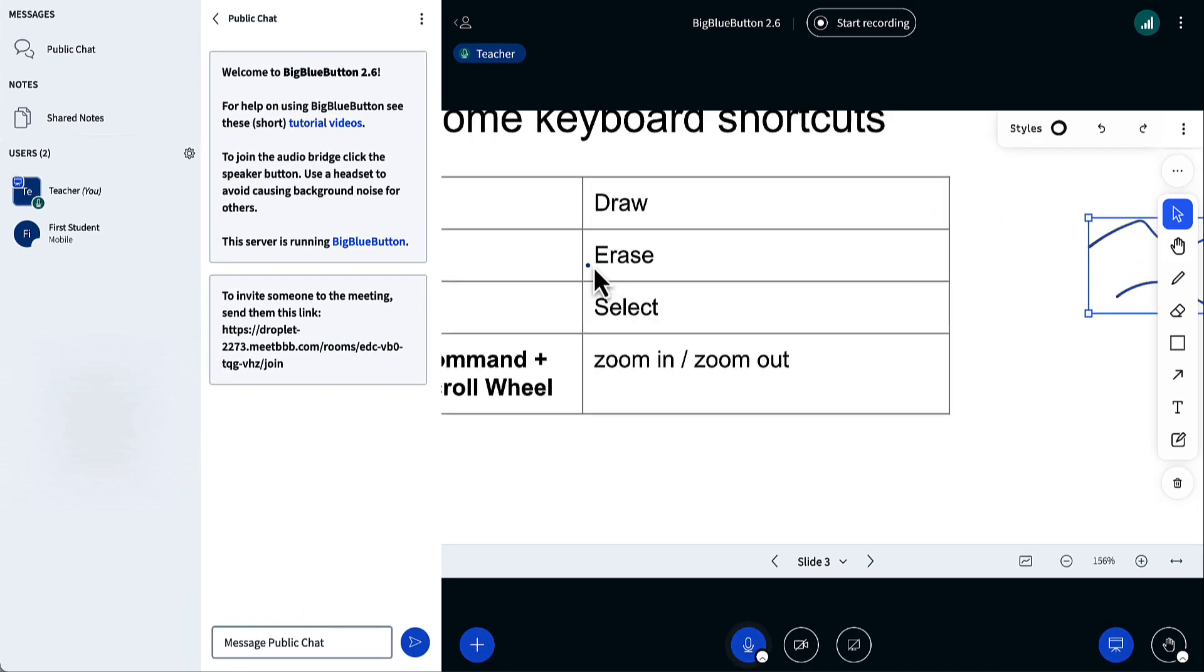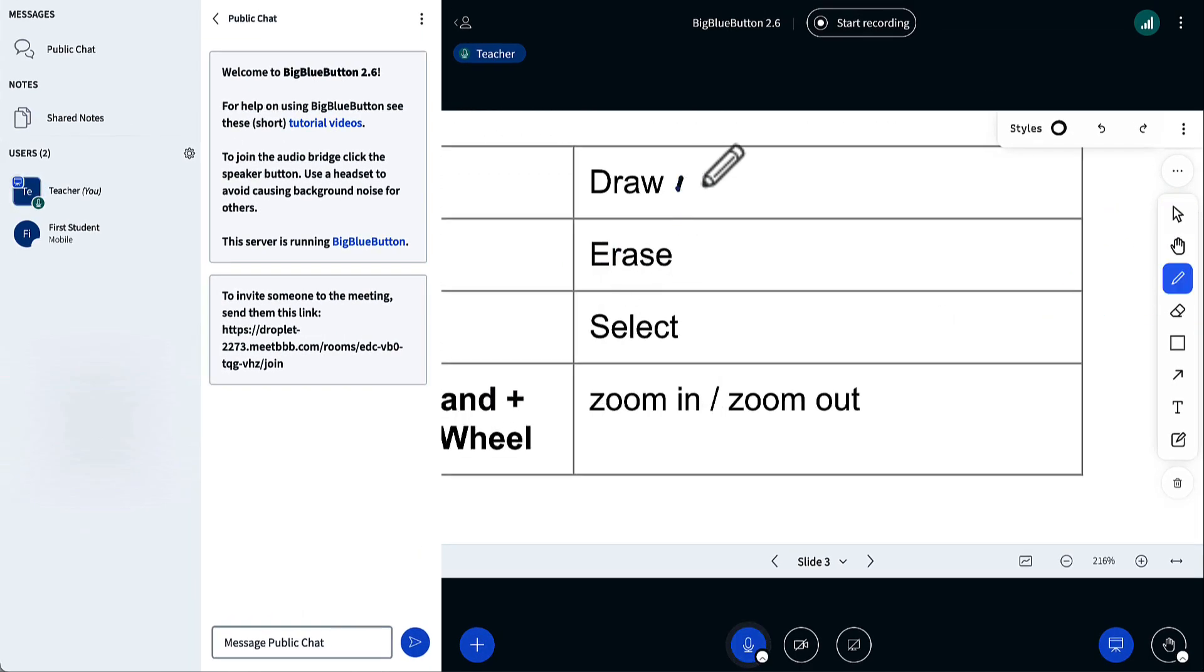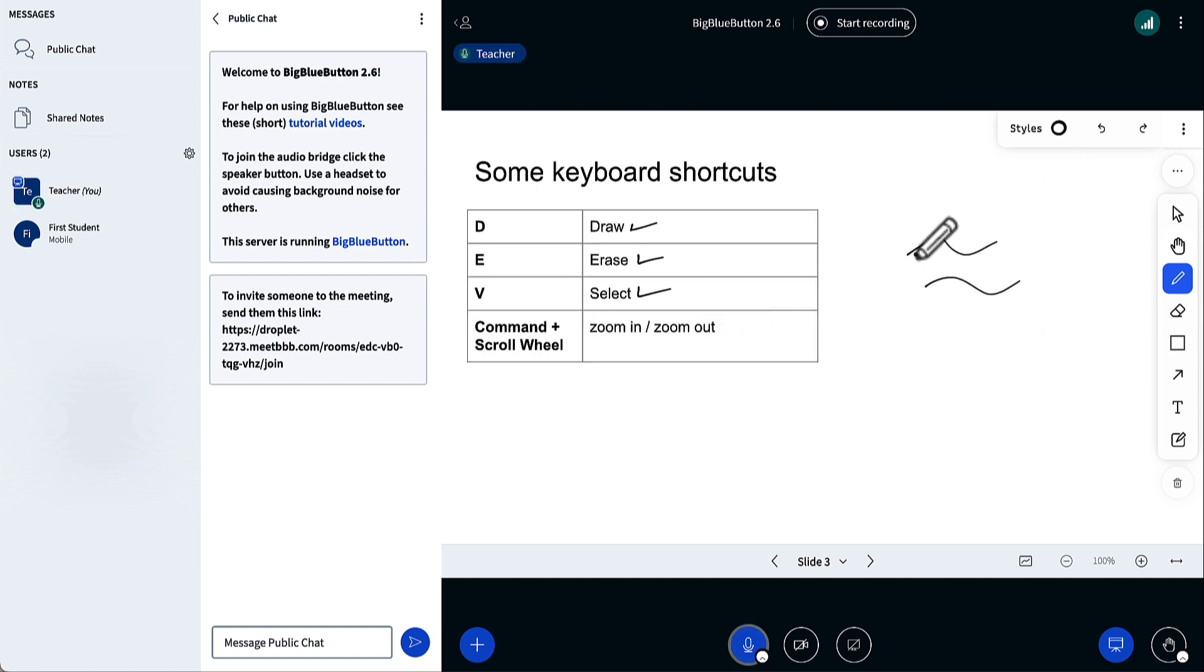If you use command and scroll wheel, I can zoom in. D for draw. Now I can annotate things very easily. There are a couple other capabilities.